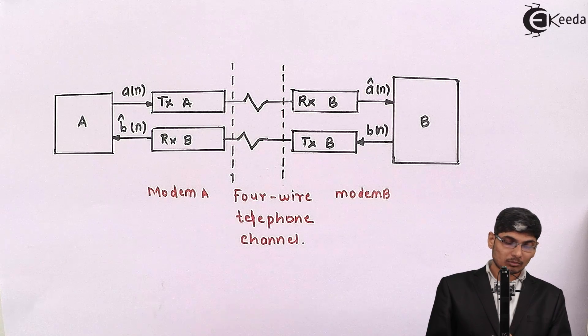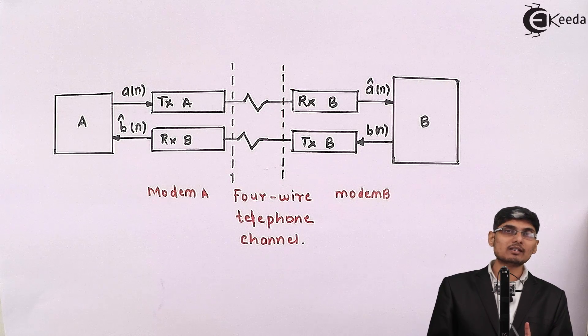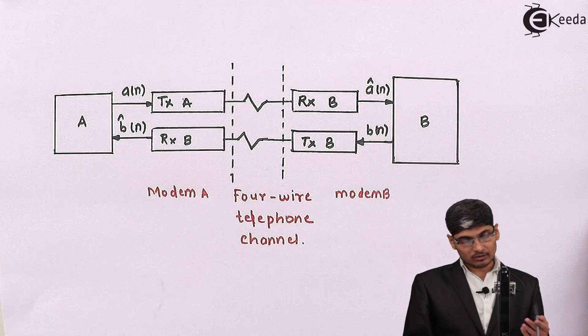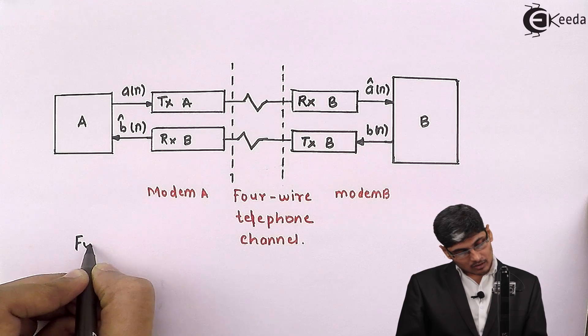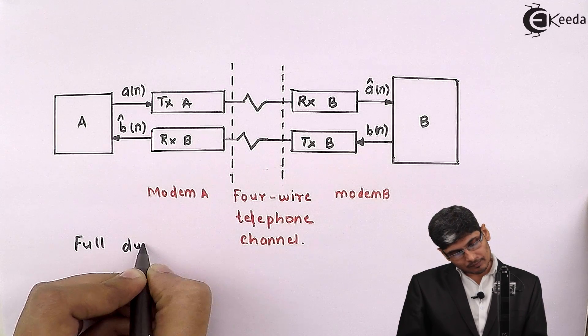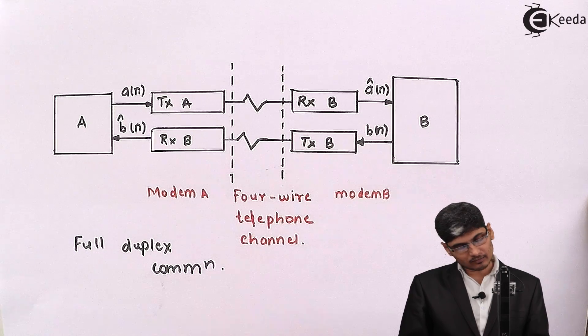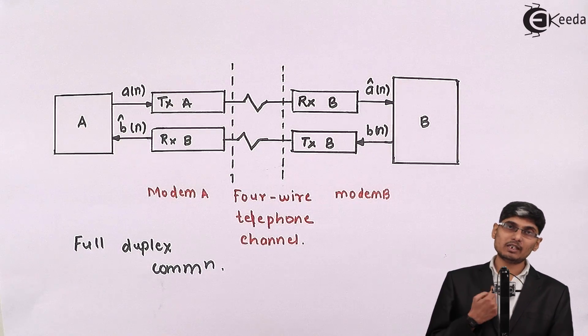Such simultaneous both-direction data flow is called full duplex mode of communication. In telephony we always have full duplex communication wherein the transmission and reception will be going on simultaneously.